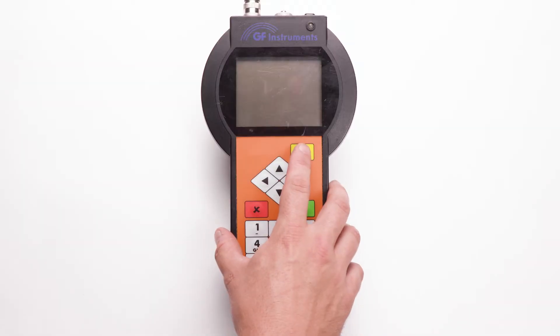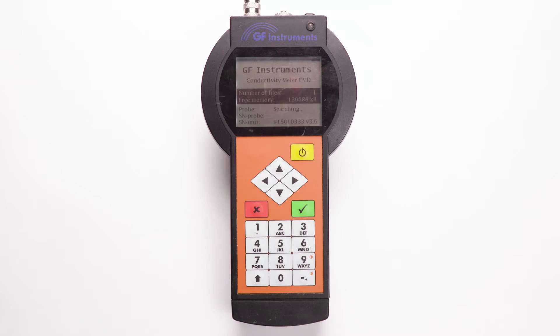Press the power key to turn the control unit on or off. The power key also acts as a backlight that can be turned on or off in the main menu. The first screen displayed shows the number of files on the unit, the remaining free memory, and the serial numbers for the probe and the unit itself. The CMDC will automatically search for a probe to connect with. Once the connection is, or is not, made, a beep will sound and then the menu screen is displayed.